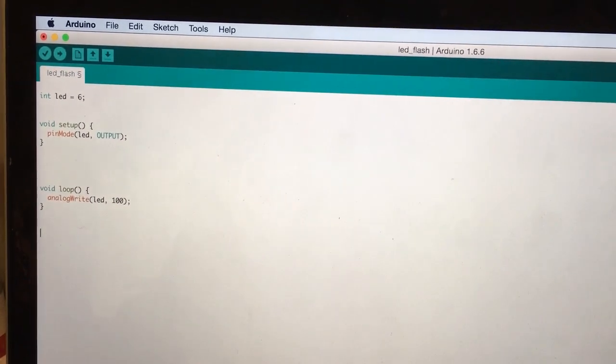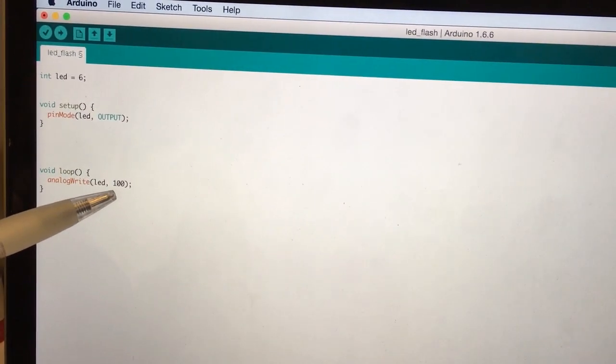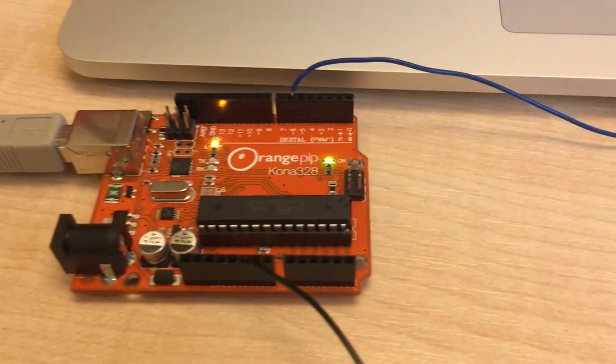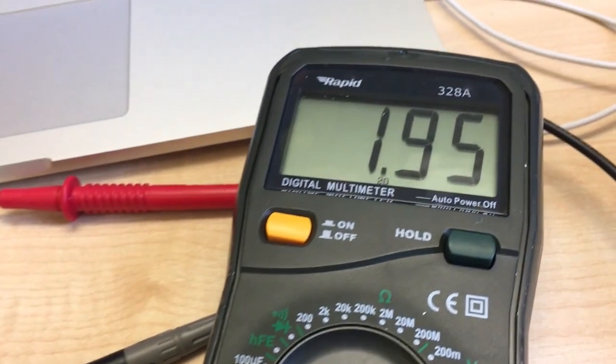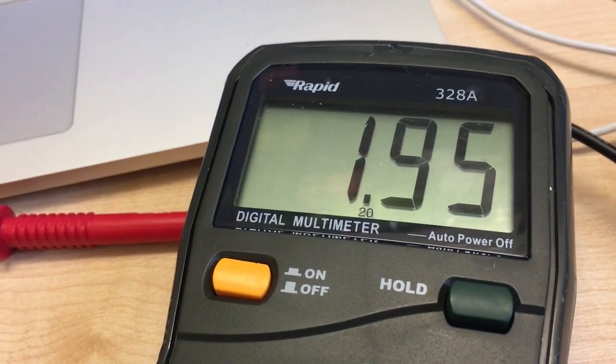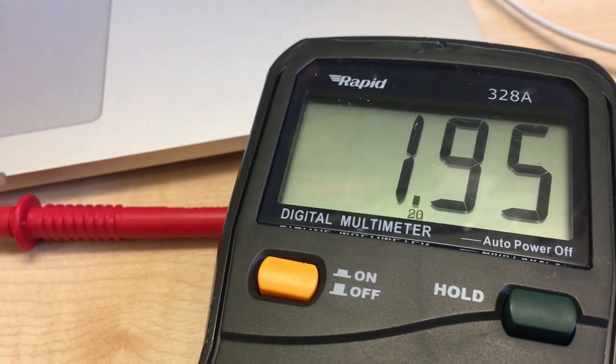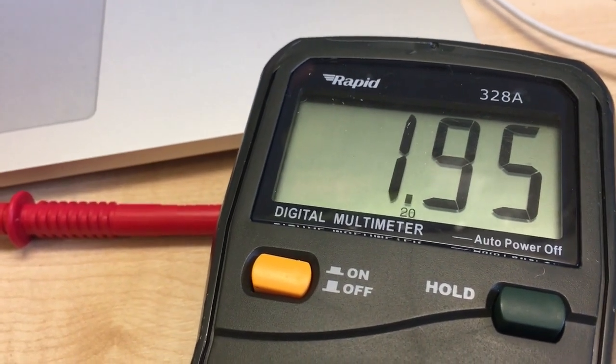So, we can test this PWM theory in practice. As you can see here, we've got an analog write of 100 on pin 6. Down here, we've got our Arduino connected to a voltmeter via pin 6 and ground. And as you can see, we're expecting 1.96. We've got 1.95 volts. So, we're 0.01 of a volt out. But that is pretty much there.